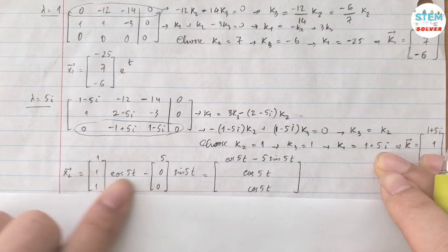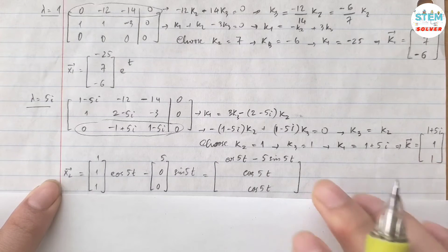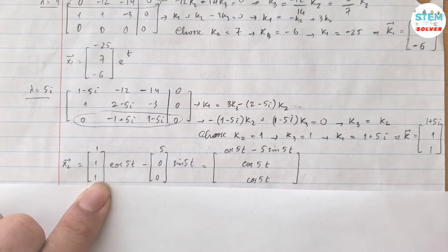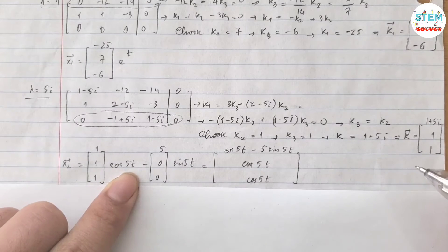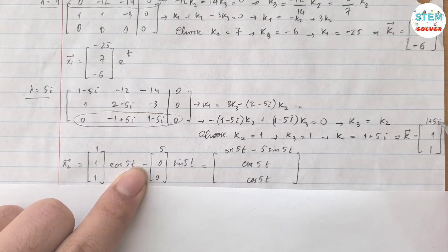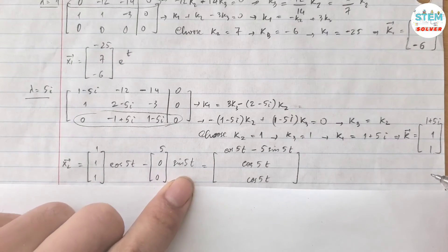Now it's time to write the solution for this lambda. So vector x2 is going to be the real part of vector k, one, one, one times cos five t, minus imaginary part of vector k, which is five, zero, zero times sin five t.